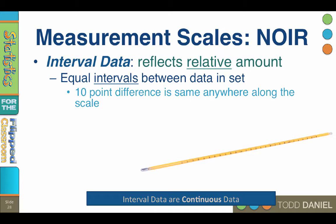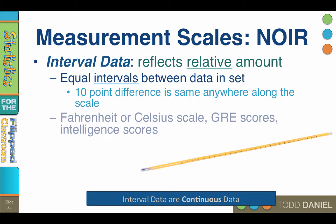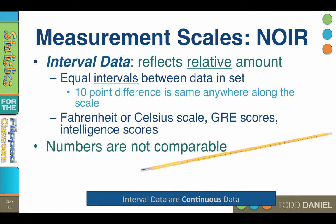For instance, a 10 point difference is the same anywhere along the scale. If you are in a 40 degree Fahrenheit room and I raise the temperature to 50 degrees, that is the same number of degree difference as if you were in an 80 degree Fahrenheit room and I raise the temperature to 90. Examples of interval scales would include Fahrenheit or Celsius temperature scale, GRE scores or intelligence scores.